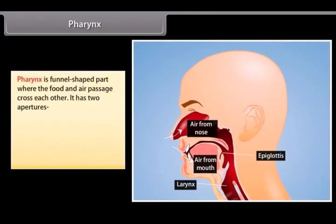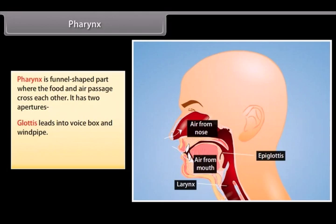Pharynx is a funnel-shaped part where the food and air passages cross each other. It has two apertures: glottis, which leads into the voice box and windpipe, and gullet, which leads into the esophagus and opens during swallowing of food.